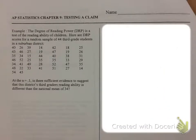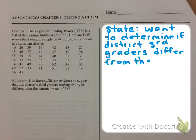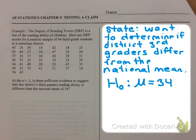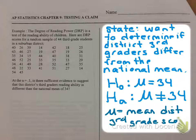I'm going to use the State-Plan-Do-Conclude method. In the State step, I want to clarify what the problem is about and identify the population of interest. We want to determine if this district's third graders differ from the national mean. The null hypothesis is that the mean is 34, versus the alternate that the mean is different from 34. Here, mu is the mean district third grade score — just third graders in this particular district — and I'm comparing them to the national mean.